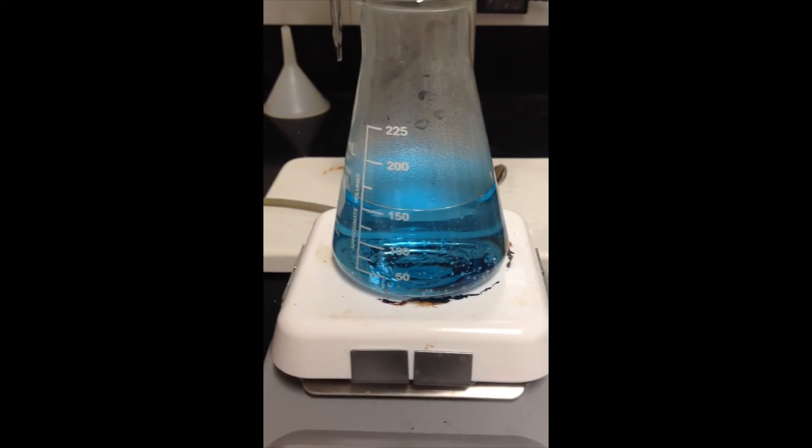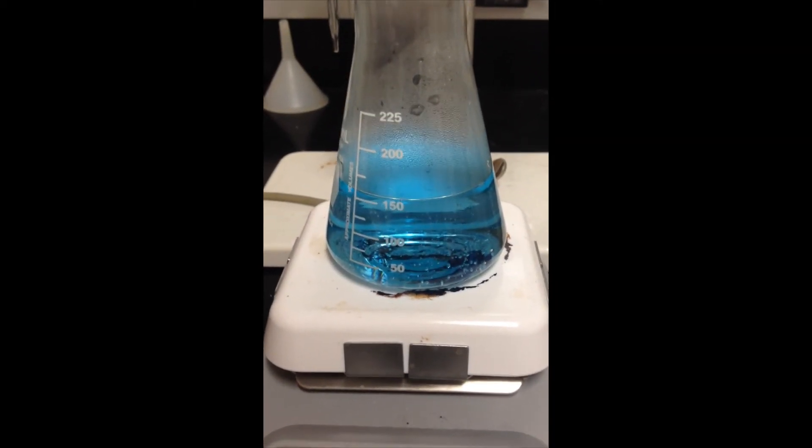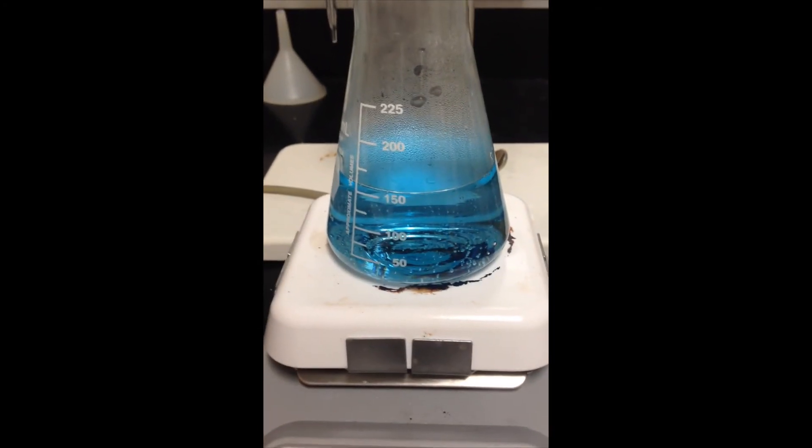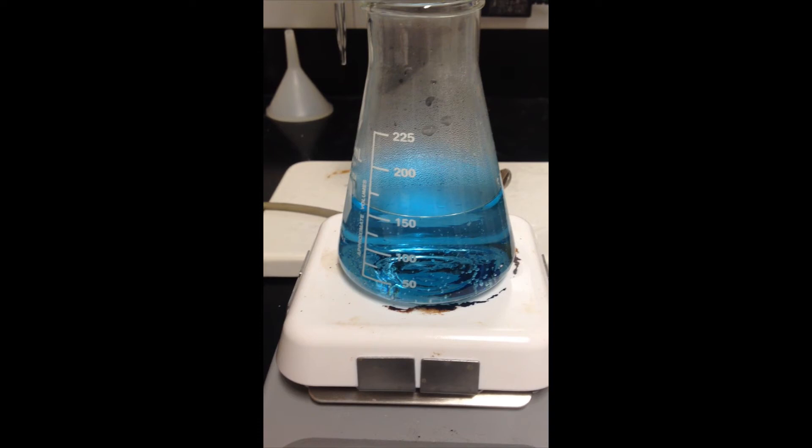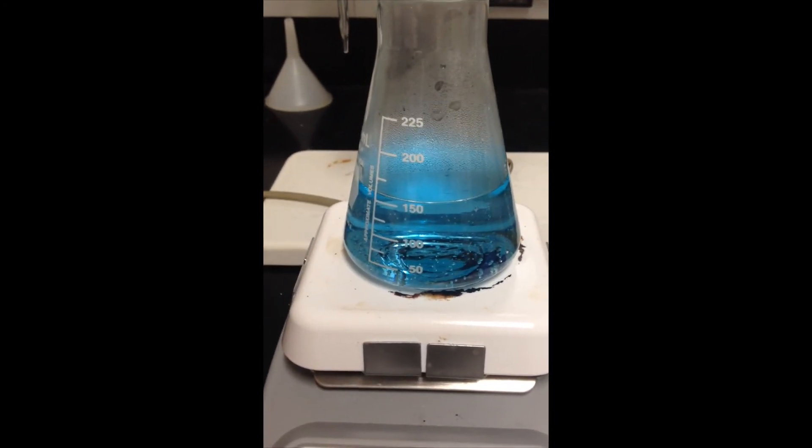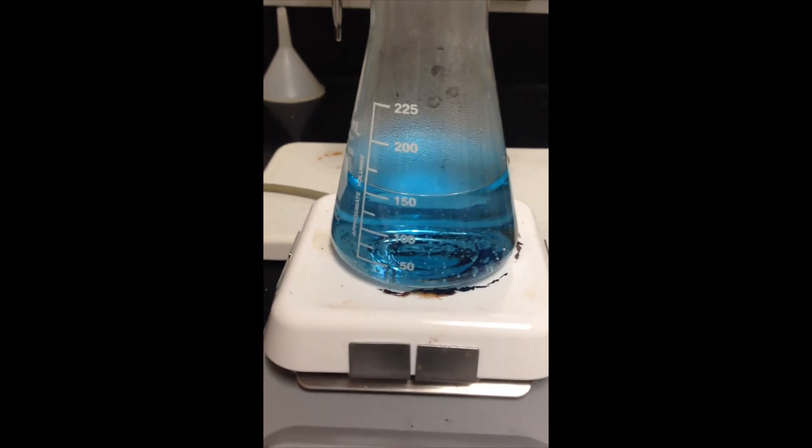Once you've got the solution at a pretty steady boil, let it sit for about three to five minutes, and then allow it to cool to room temperature before you resume the standardization. The color of Bromocresol green is temperature dependent, and we want that color to reflect room temperature, so make sure to let it cool before you jump back on the standardization.